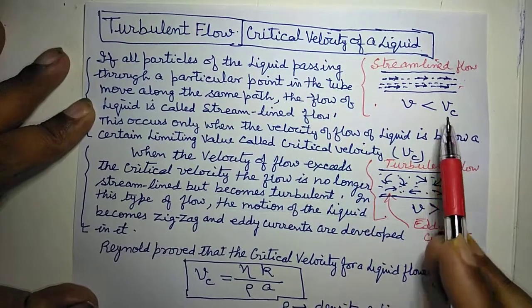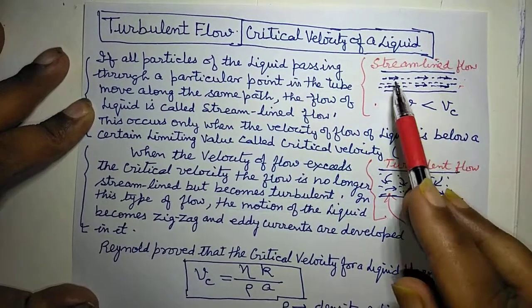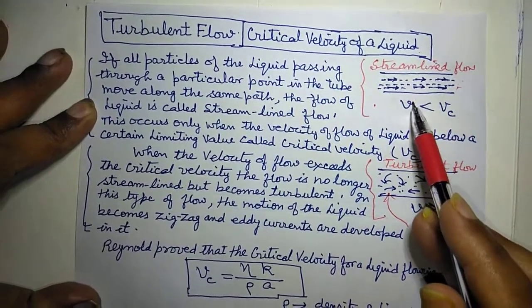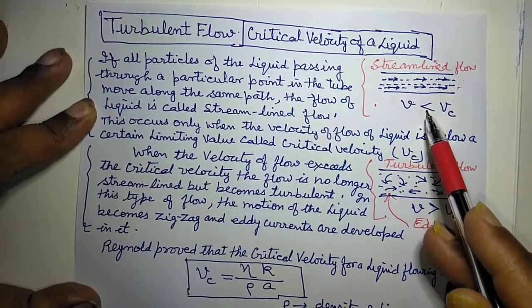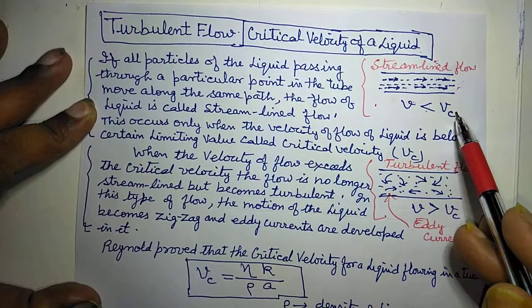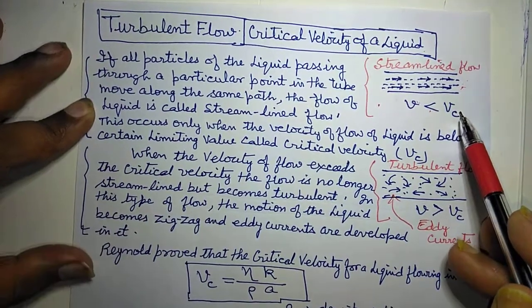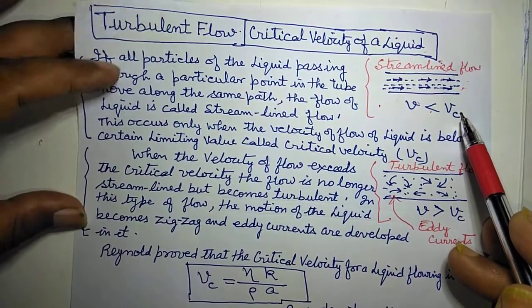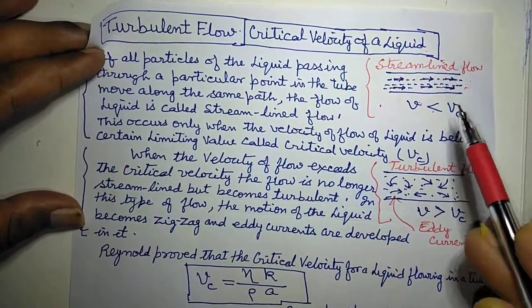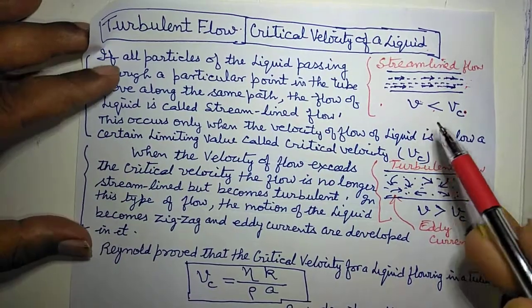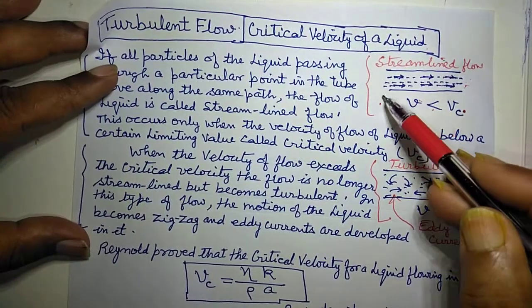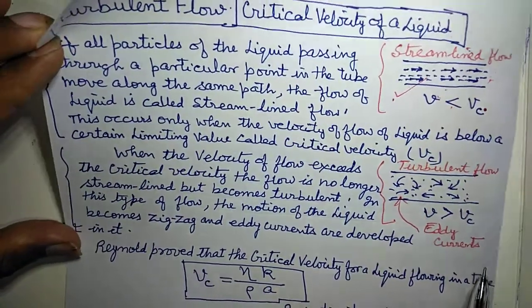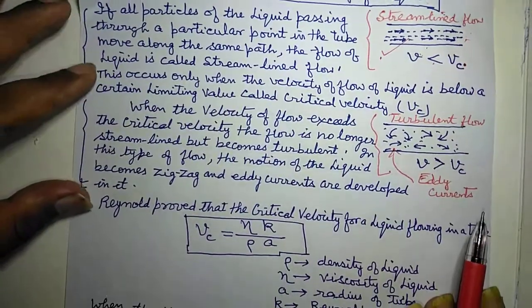Aisa tab hota hai jab in liquid particles ki jo velocity hai, ye kam hai ek particular velocity se — vc, c for critical. Ek particular velocity se agar kam hai, tabhi aapka ye flow kya hoga — streamline flow hoga.